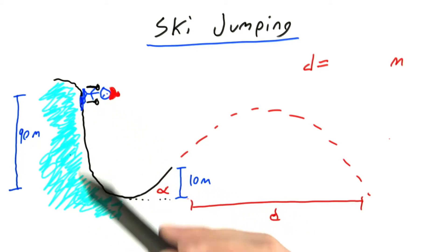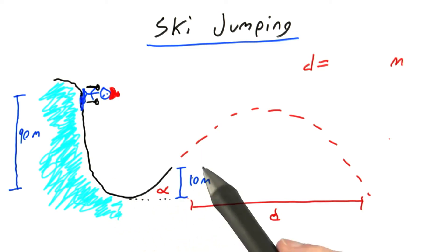For this problem, imagine that we have a skier on this really steep slope that's 90 meters tall and he comes to this ramp of height 10 meters that makes an angle alpha with the ground.